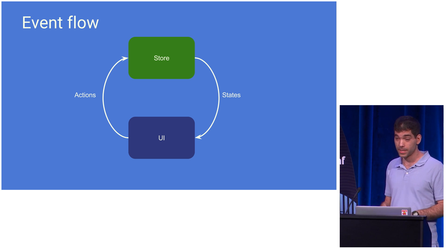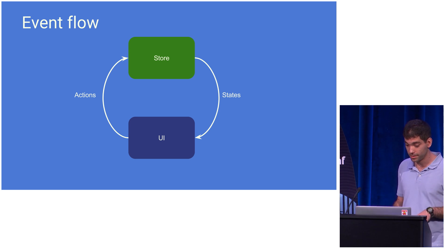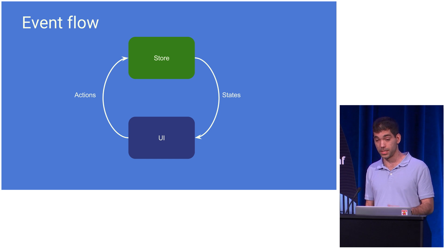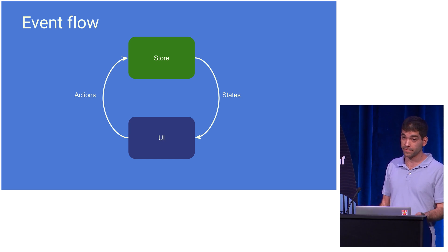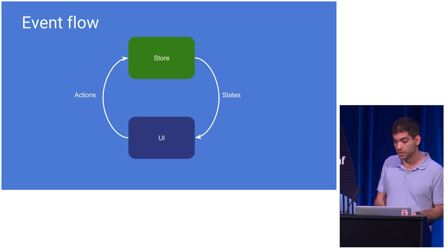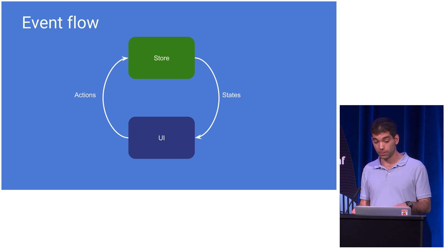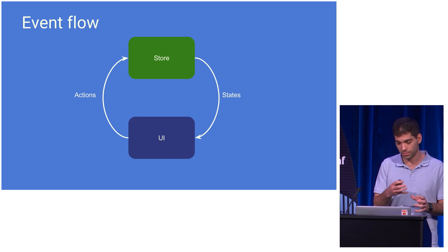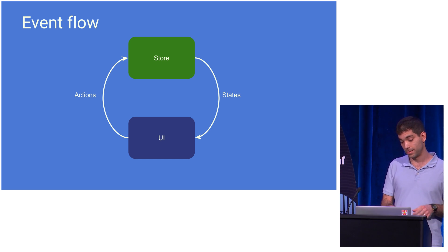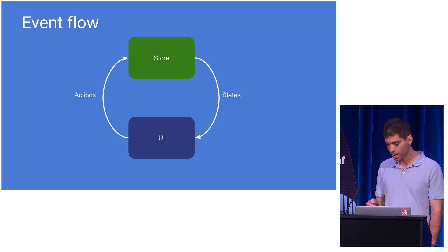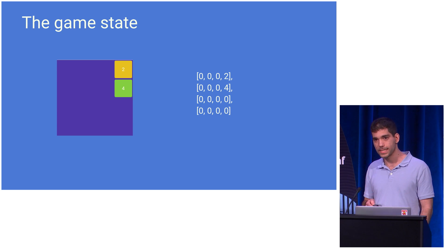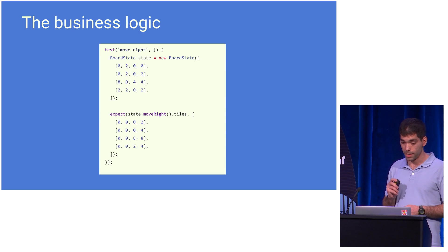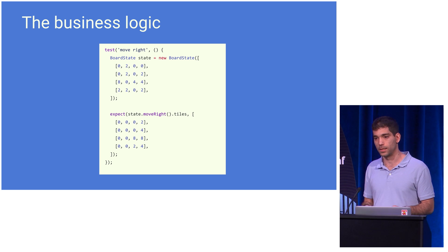We're going to implement this with a Redux architecture. This is a very typical Redux architecture, where the UI responds to user events by dispatching actions to the store. The store is where we manage our state. The store responds to actions by computing new states and publishing these states back to the UI. We're going to represent the state for the game with a four-by-four integer matrix, and we're implementing four mutation operations: move left, right, up, and down.